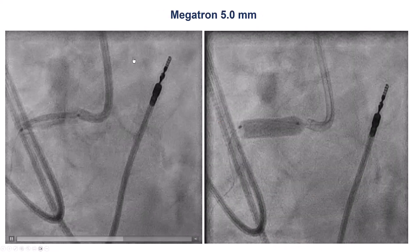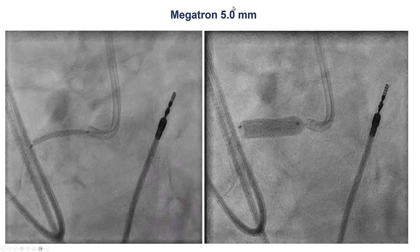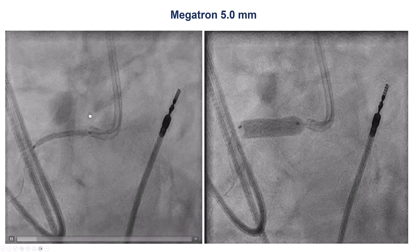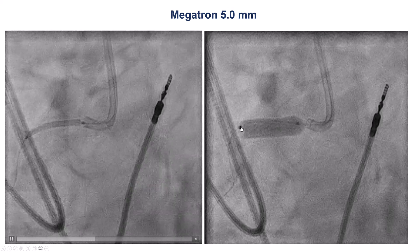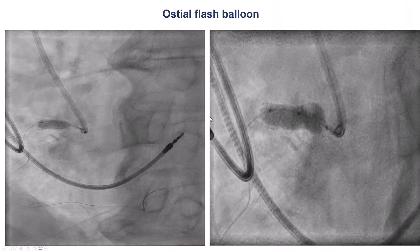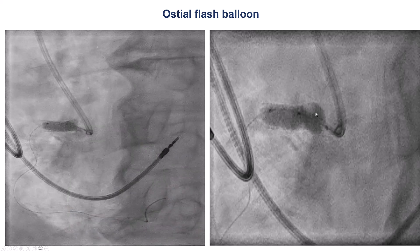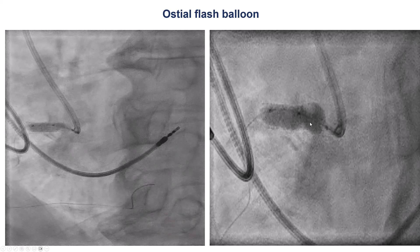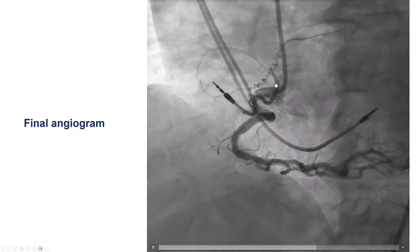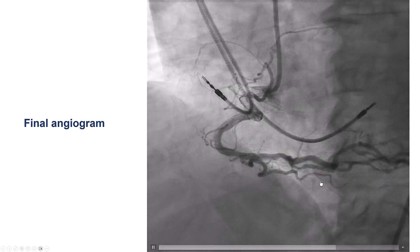For this fairly large lesion, we used a Megatron stent — a 5.0 mm stent sized based on the IVUS measurements. This stent has excellent visualization as well as very good radial strength. It was deployed and post-dilated. We also used an ostial flare balloon to flare the origin as much as possible and facilitate future re-engagement. This provides a nice result with excellent backflow into the aorta and excellent flow into the right coronary artery.